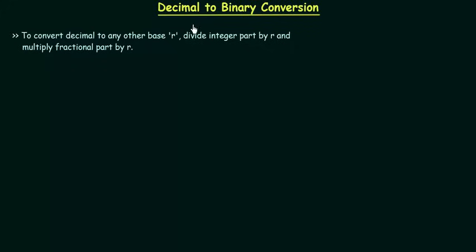In the last presentation, I introduced the binary number system. From this lecture, we will start the conversion part of our number system. The first conversion we have to study is decimal to binary conversion. We have two methods to convert a decimal number to binary, and we will start with the first method.